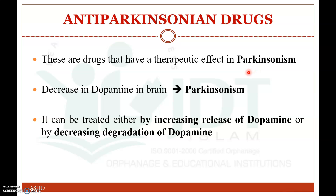What is Parkinsonism and what is the reason for it? Parkinsonism will occur if there is a decrease in dopamine, which is a neurotransmitter in the brain. We can treat Parkinsonism by either increasing the release of dopamine or by decreasing the degradation of dopamine.